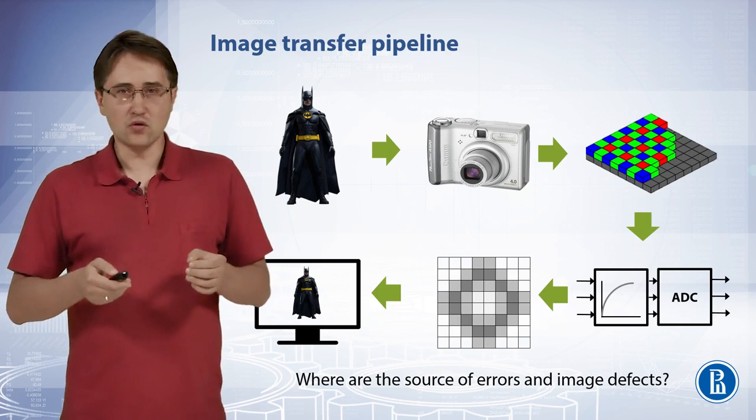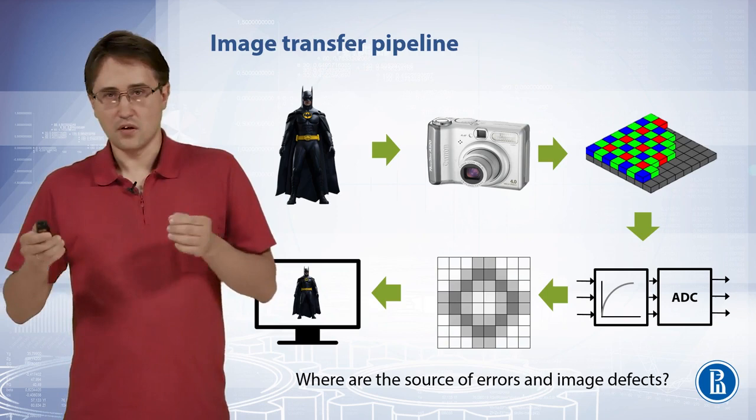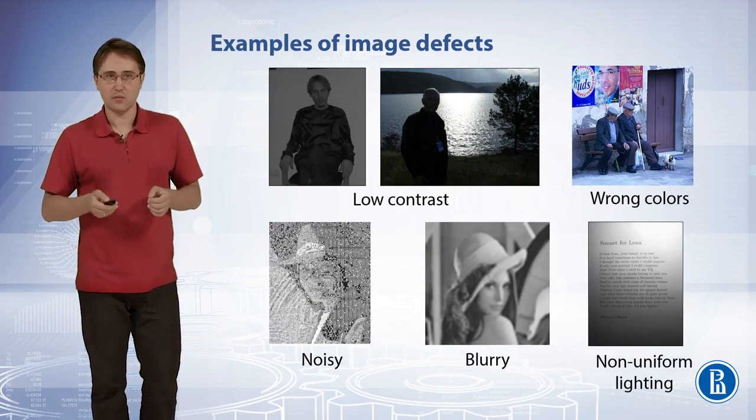In all stages, image data is transformed, and during each transformation there can be errors and added artifacts which we should process. I will give several examples of image defects that can be compensated by image processing.